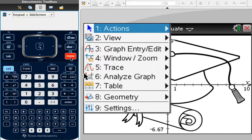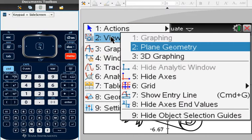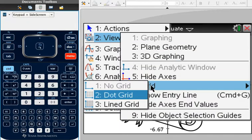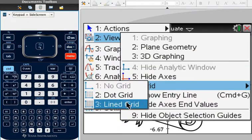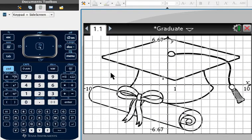To turn on your grid lines, go to Menu, go to View which is option number two, go down to Grid which is option six, and then Lined Grid. That will turn it on.